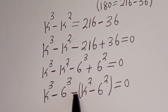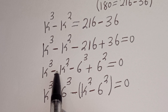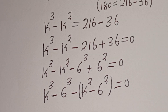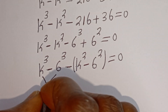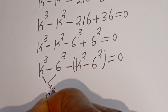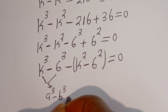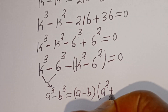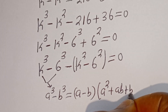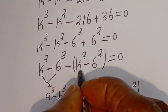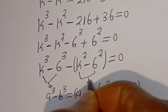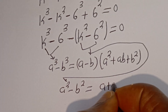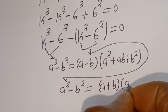Then here if you open this bracket with this negative: minus multiplied by K squared will give you minus K squared, then minus multiplied by minus 6 squared will give you plus 6 squared. Now take note that if you have a to the power of 3 minus b to the power of 3, this is equal to (a minus b)(a squared plus ab plus b squared). Also, if you have a squared minus b squared, this is equal to (a plus b)(a minus b).